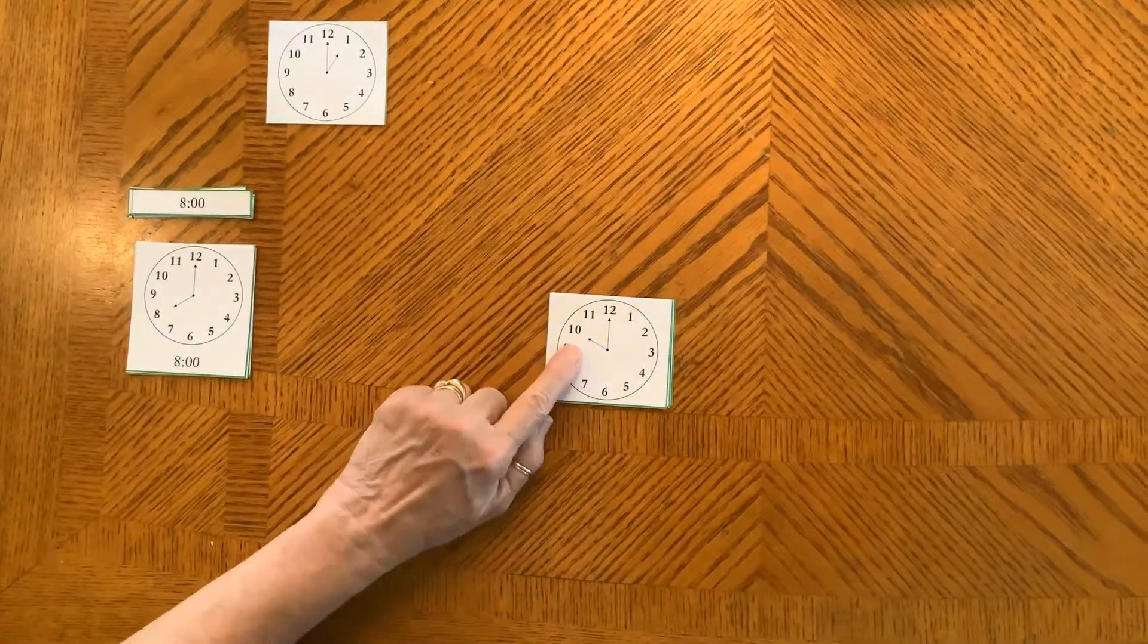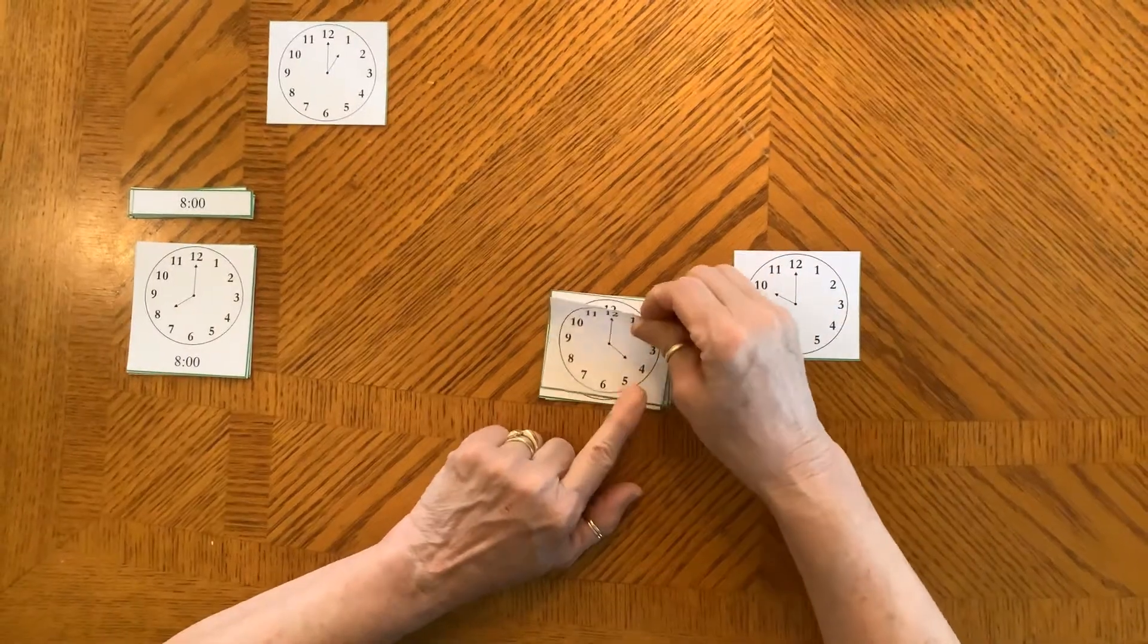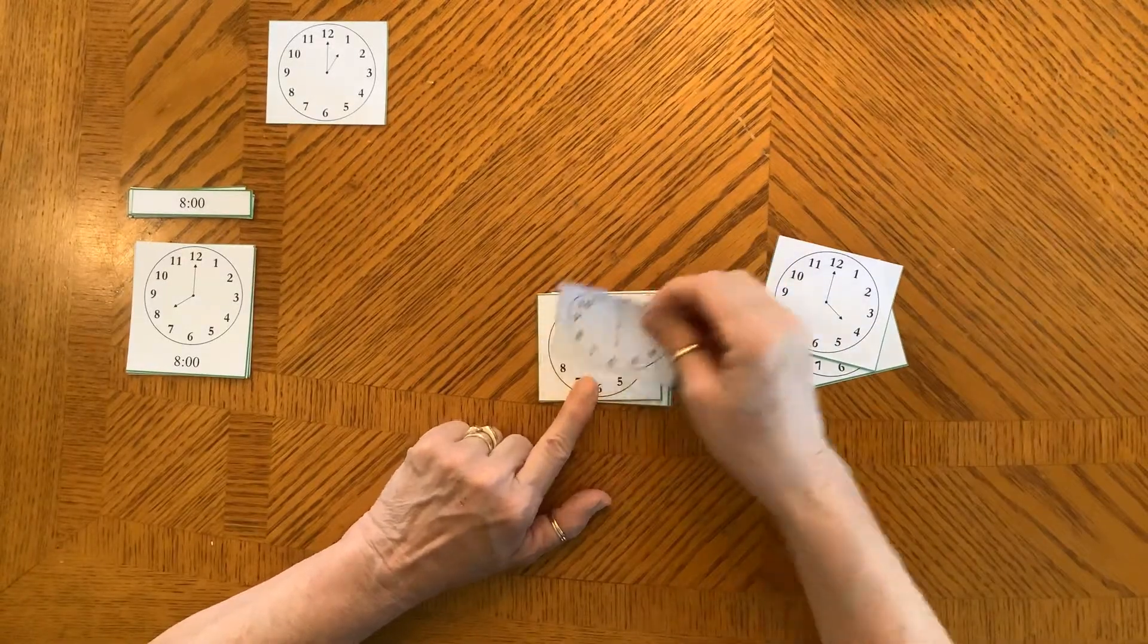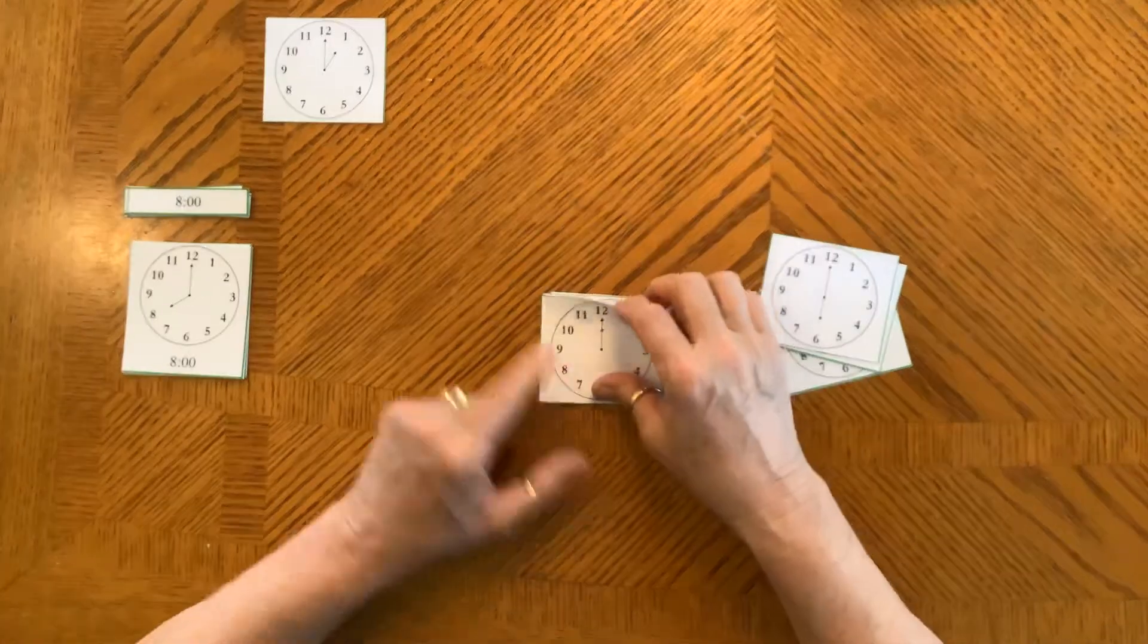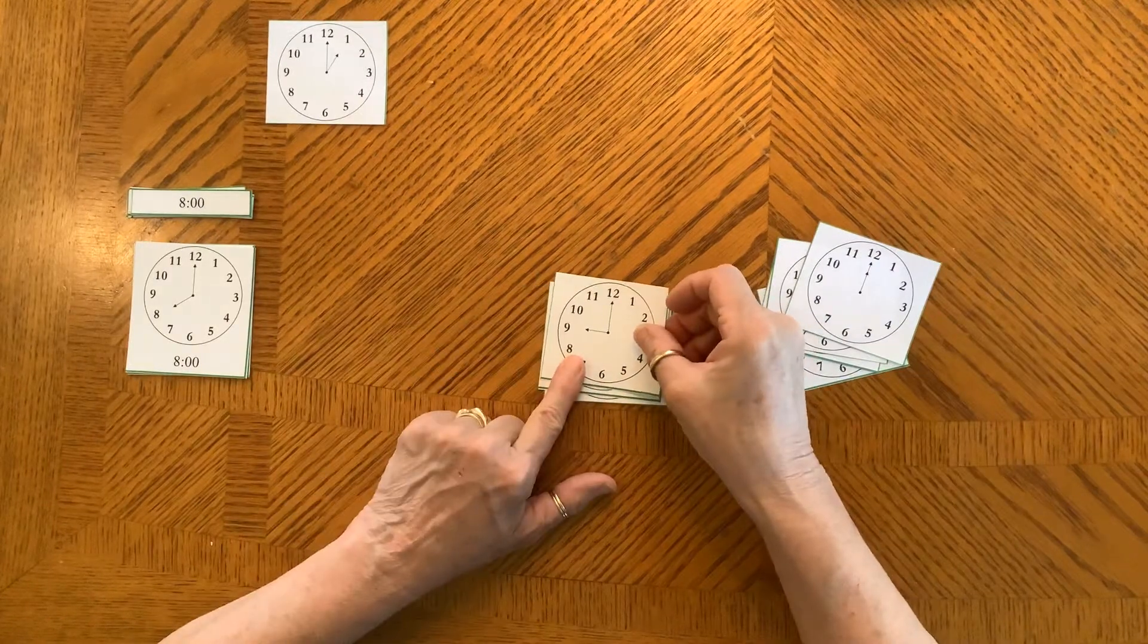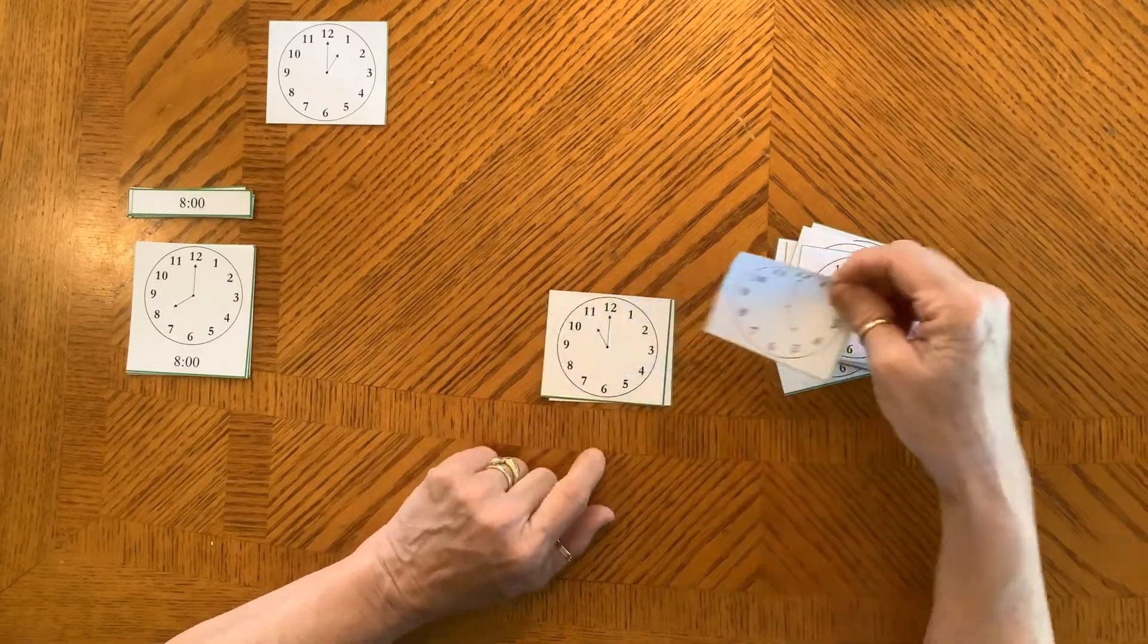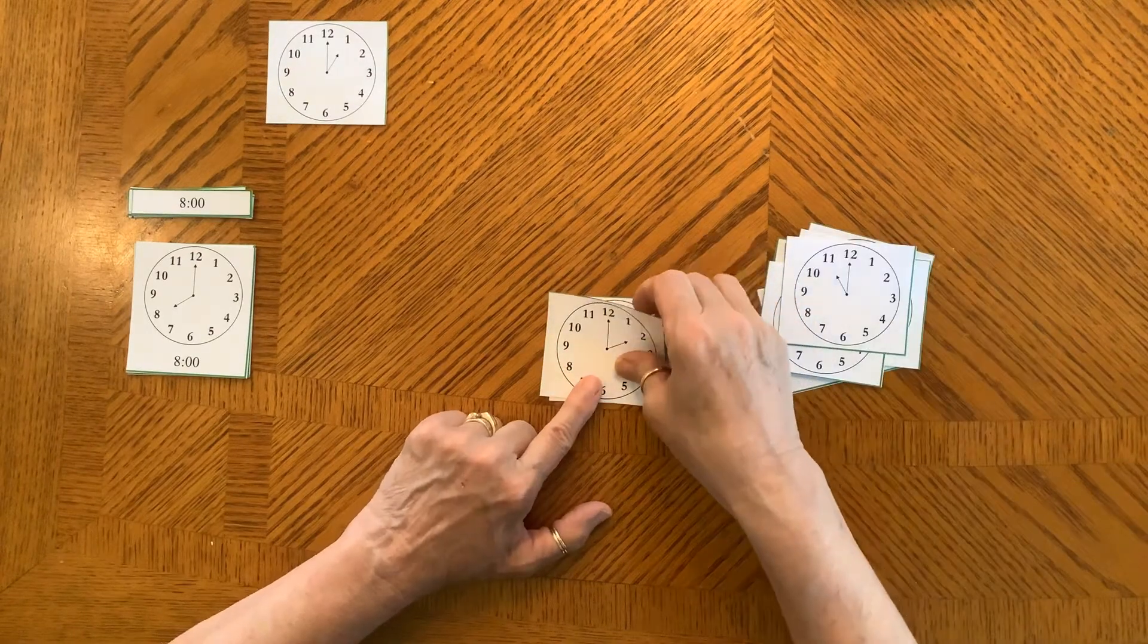And we read them as we go. Ten o'clock. Four o'clock. Six o'clock. Twelve o'clock. Oh, that makes me hungry. I think of lunch when I think of twelve o'clock. Nine o'clock. Three o'clock. Seven o'clock. Five o'clock. Eleven o'clock. Two o'clock. I found it. Okay. Two fingers right here.